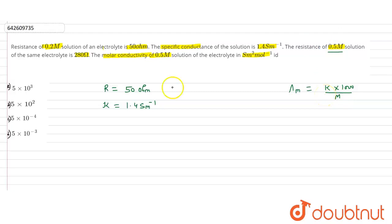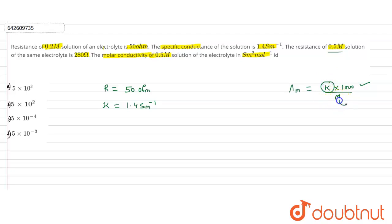We know the molar conductivity equals κ × 1000 / molarity. We have the molarity value of 0.5, but we don't know the conductivity κ for the 0.5 molar solution — we only know κ for the 0.2 molar solution. So first we need to find the conductivity for the 0.5 molar solution.